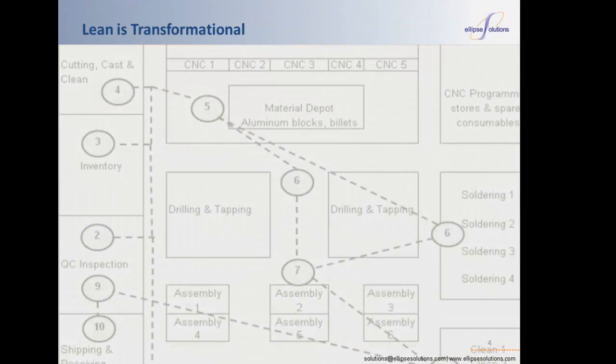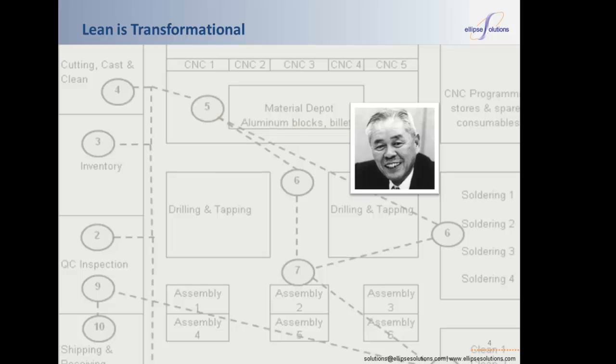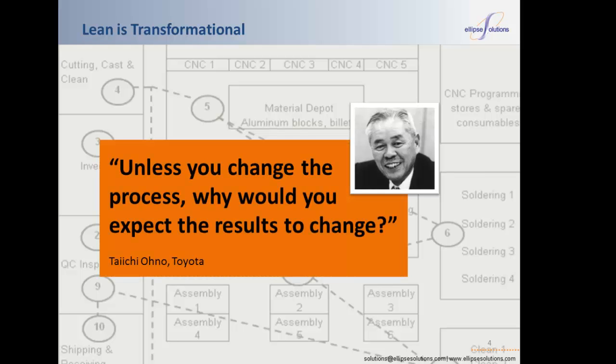Lean manufacturing evolved from the Toyota production system. After World War II, Taiichi Ono began a program of process improvement at Toyota. He determined that traditional batch and queue production, which promotes producing products in large batch quantities, was an outdated model. Improving production processes led to the transformation of Toyota's factories so that equipment is laid out based on a more logical sequence of manufacturing and assembly steps. Lean thinking adopted Ono's transformational approach.